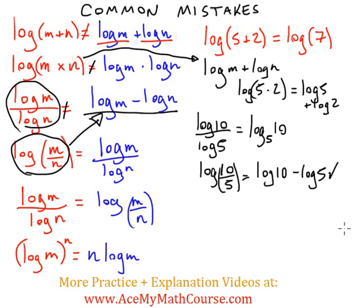Great. So of course, these guys are also not equal. Now, another common mistake is to say that this is equal to that. That's what we have here in this fifth common mistake. So log m divided by log n is not equal to log of m divided by n. That just does not work.